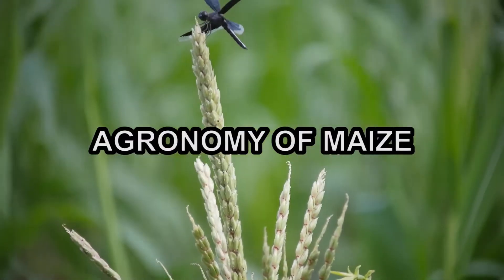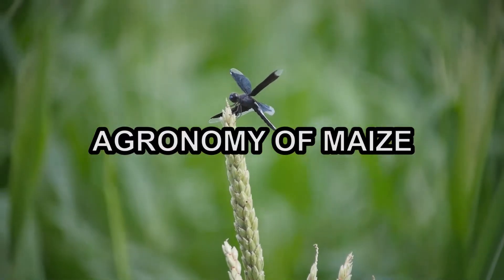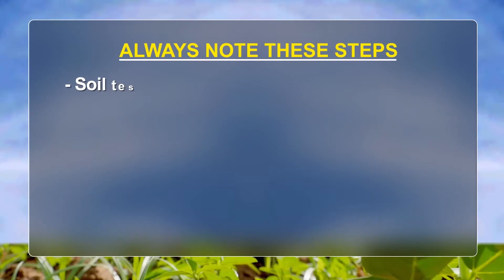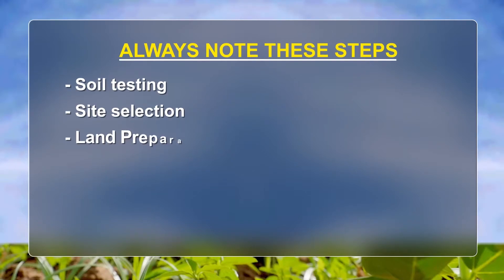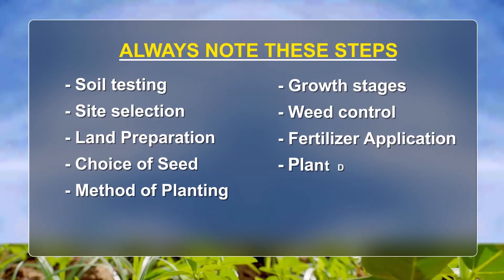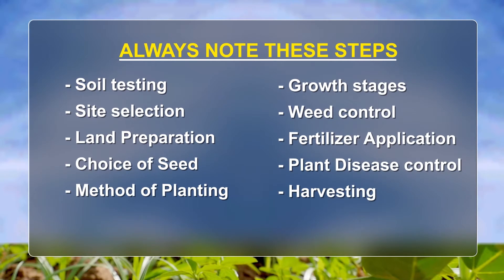The agronomy of maize. Always note these key steps: soil testing, site selection, land preparation, choice of seed, method of planting, growth stages, weed control, fertilizer application, plant disease control, and finally, harvesting.